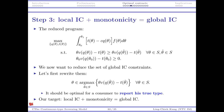The reduced problem keeps the same objective function, retains all IC constraints, but only needs one IR constraint — the one for the lowest type. All others are redundant. Now we reduce the IC constraints: we need to replace the global IC constraints with local IC constraints. The goal is to show that local IC plus monotonicity is equivalent to global IC.